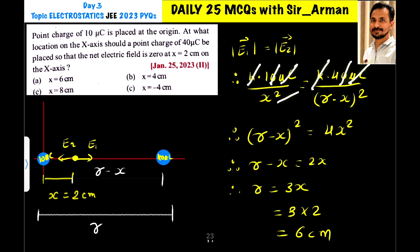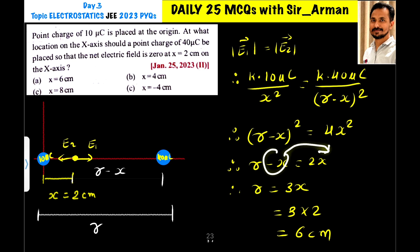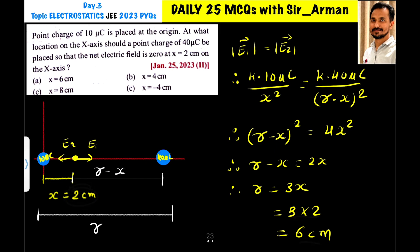Since k and the microcoulomb units cancel, we get 10/x² = 40/(r − x)², which simplifies to 4x² = (r − x)². Taking the square root of both sides gives r − x = 2x, so r = 3x. Since x equals 2 centimeters, r equals 3 × 2 = 6 centimeters.